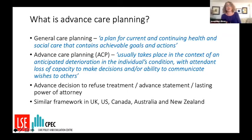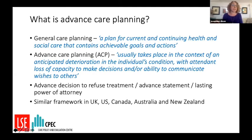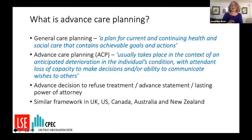Advanced care planning can cover decisions and preferences around medical treatment in different circumstances and preferences around how social and personal care is delivered. In the UK one can complete an advanced decision to refuse treatment, which is legally binding. One can also complete an advanced statement, assign lasting power of attorney for health and care. The exact legal arrangements vary but there's a very similar framework in comparable countries including the US, Canada, Australia and New Zealand, where fieldwork for this study was conducted.